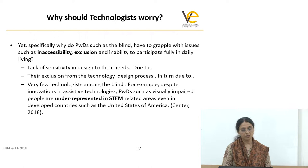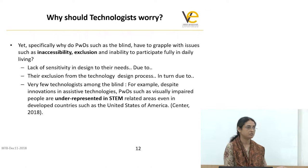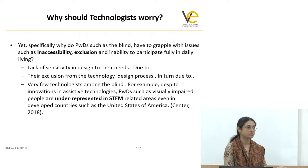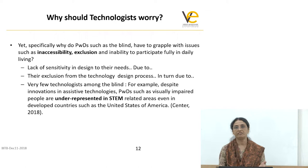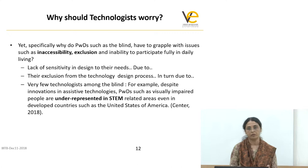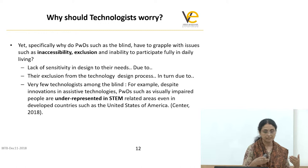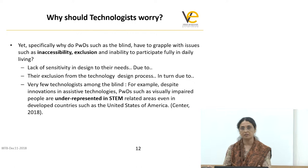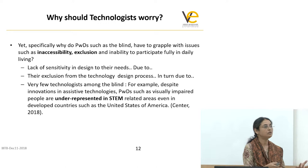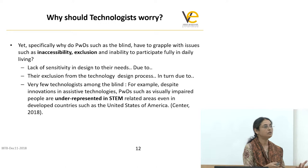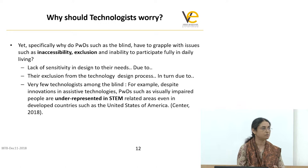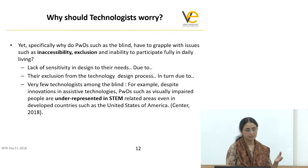To grapple with issues of inaccessibility and exclusion, one thing that came up is that existing technologies are not affordable — affordability is one issue preventing enough technology in schools to enable children to study science and math. But besides price, there is also a lack of sensitivity in the design of assistive technologies — a lack of sensitivity to the disabled community when writing code or designing hardware. The person designing it wouldn't really think of that community as the users of what they are designing.